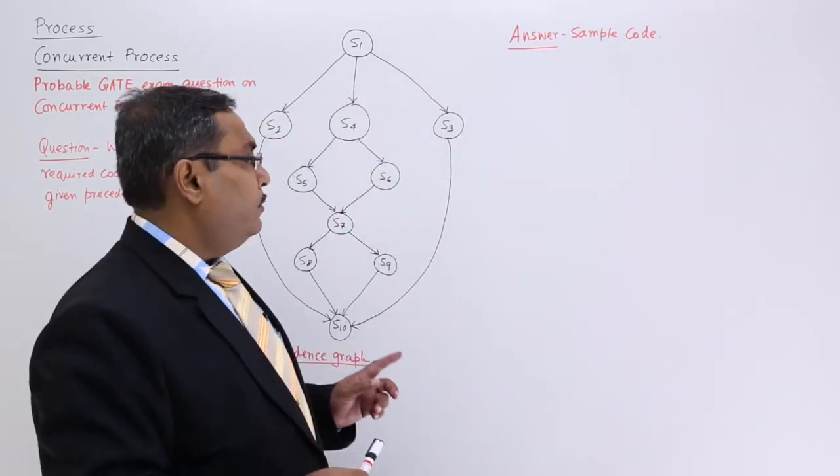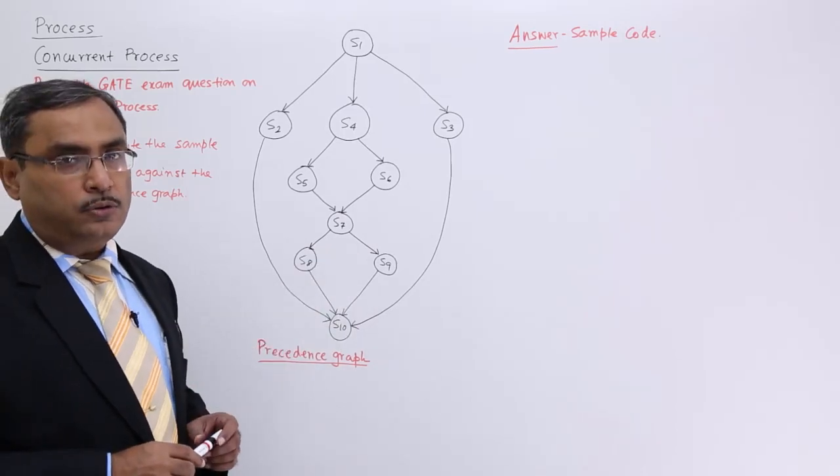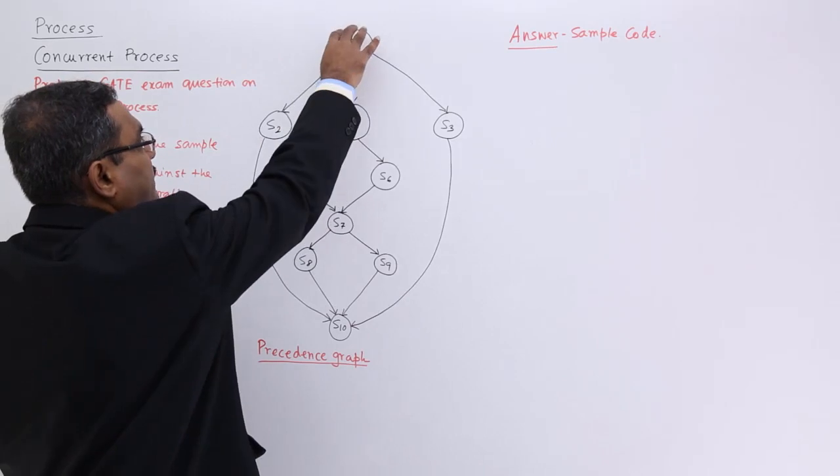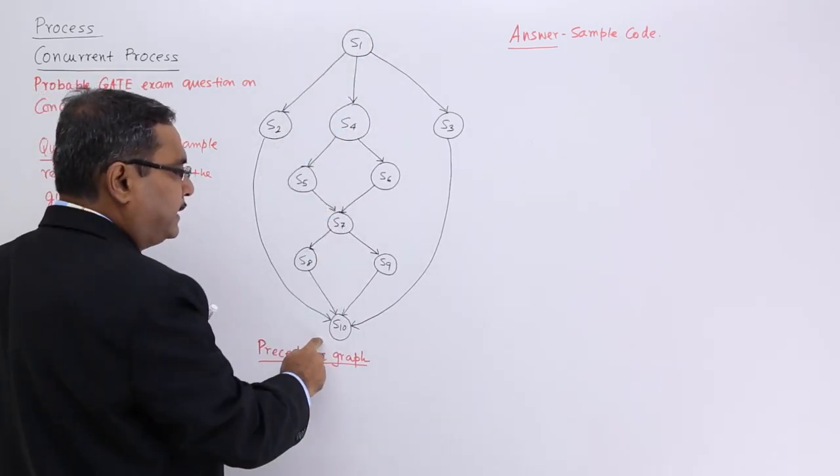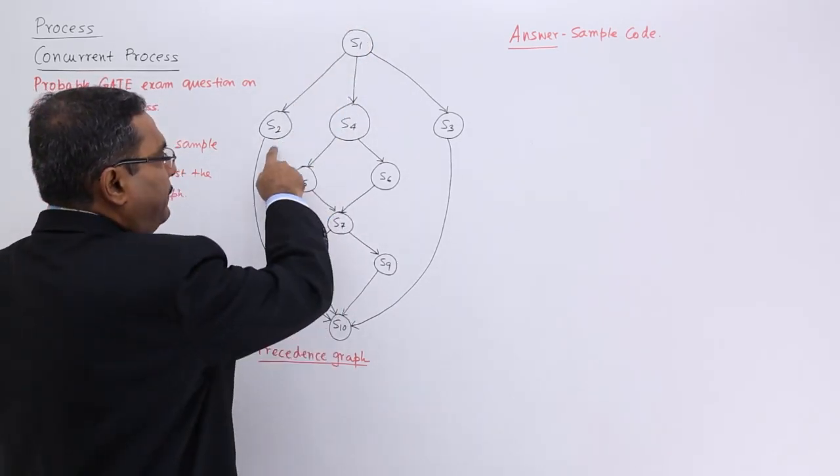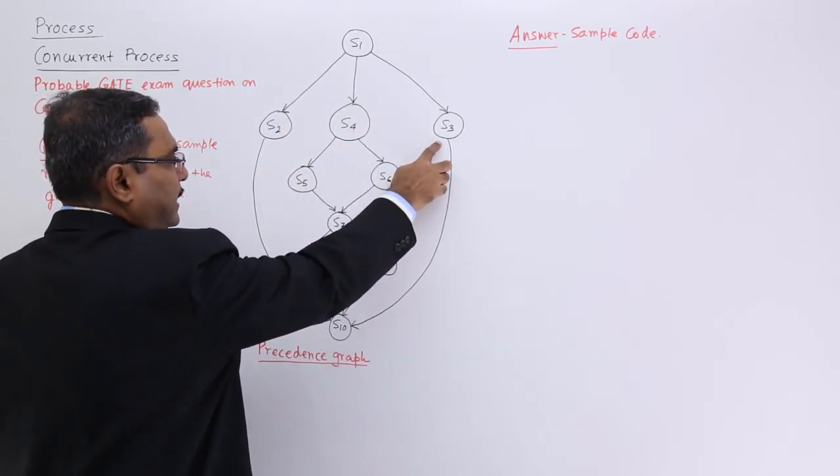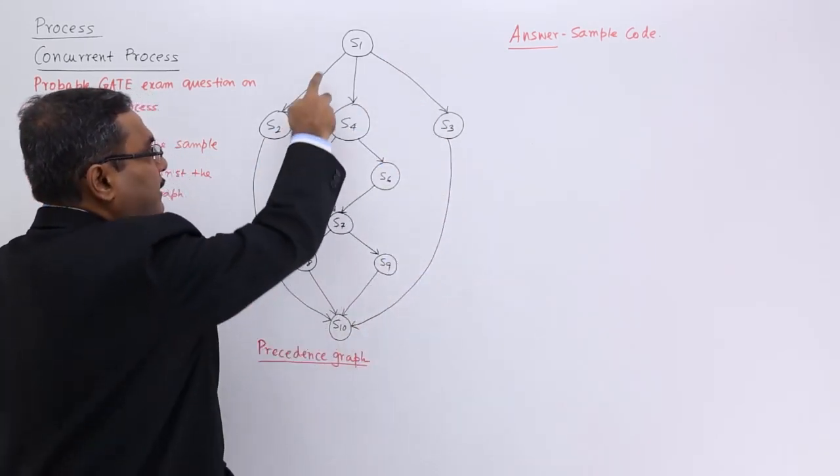Now, against this particular precedence graph, how to write the sample code? Please follow my sequence. You see this is my begin and this is my end. In between, we have some concurrent things. These are concurrent if you watch their edges.